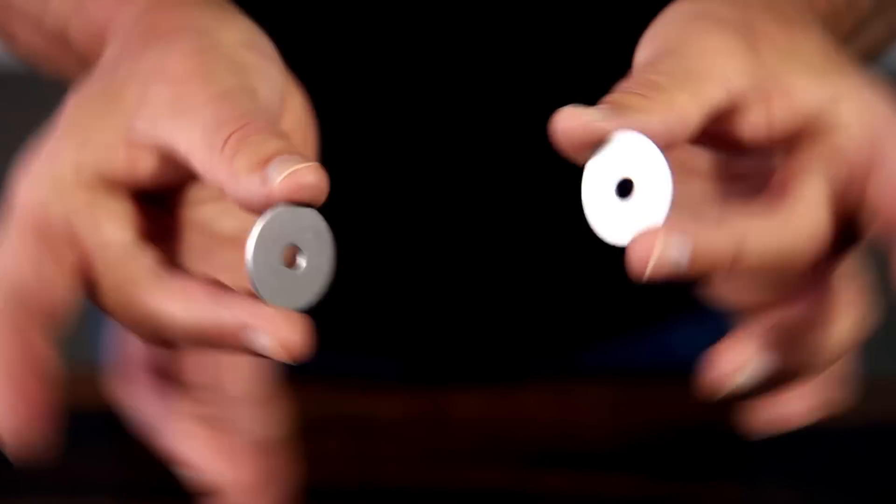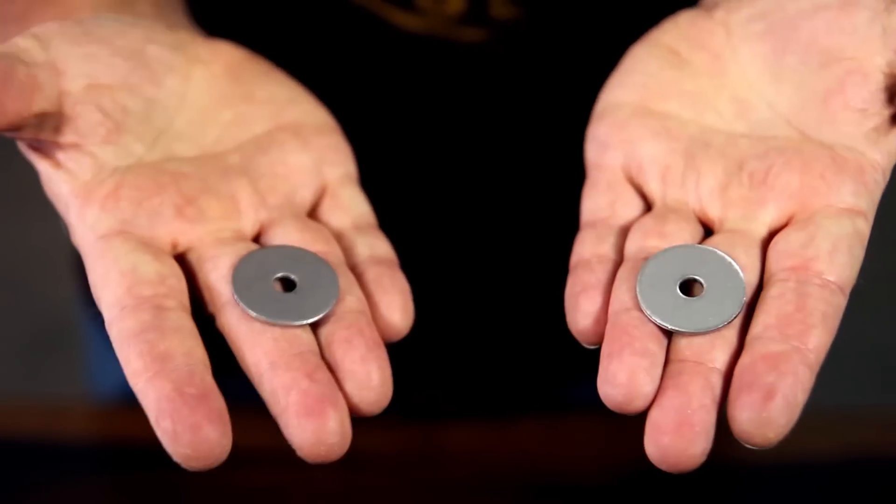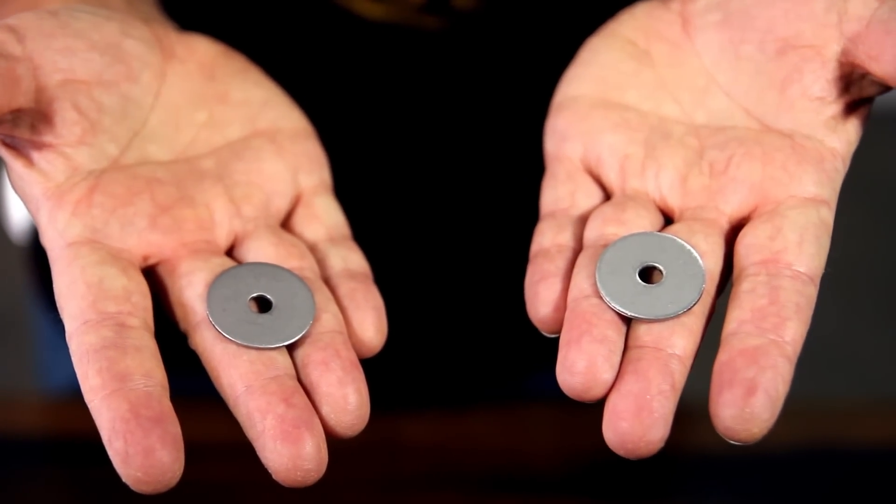Holy Moly is my all-time best-selling coin trick. It's also a perfect example of doing something extraordinary with something that's absolutely ordinary. The specially machined washers look exactly like the kind of ordinary washers you'd find at any hardware store.